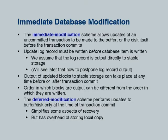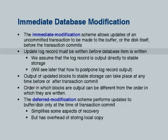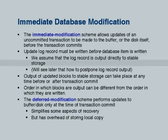Immediate modification allows updates of an uncommitted transaction to be made to the buffer. Moreover, it even allows that uncommitted update to be output to disk if required — if the buffer is full, the buffer manager may output uncommitted writes to disk. The recovery mechanism must be able to undo these uncommitted writes later if the transaction fails, so the log record with the old value must be available. Initially we assume that when you write a log record it is output immediately to stable storage.